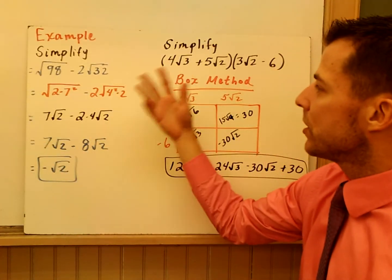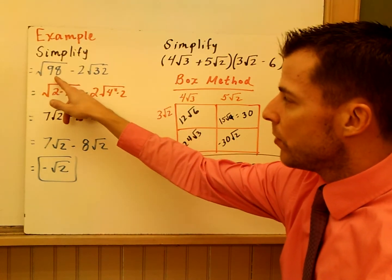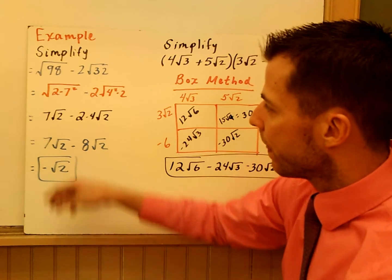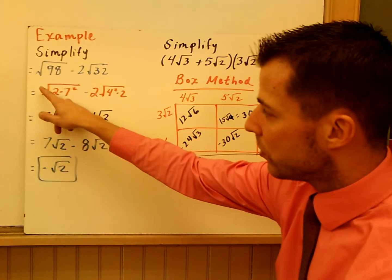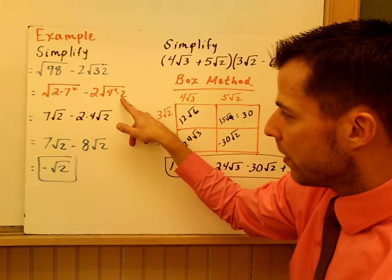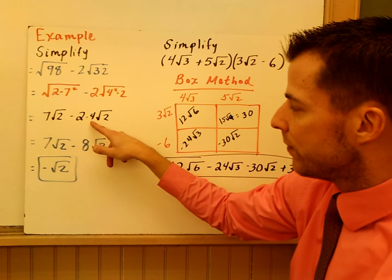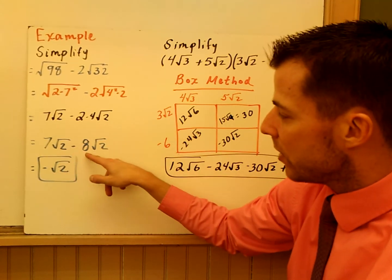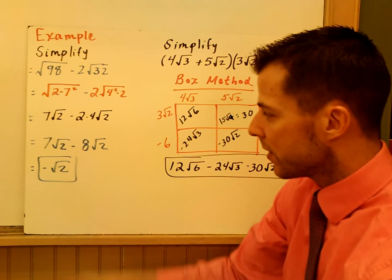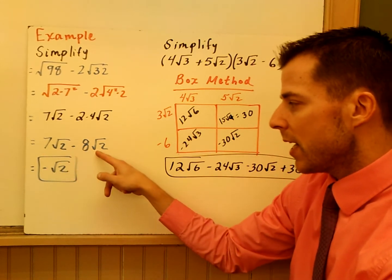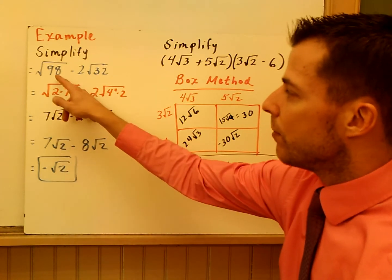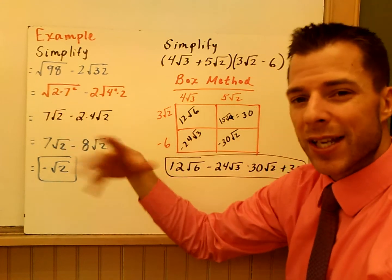Last example — combining the concepts. Simplify the square root of 98 minus 2 times the square root of 32. Break down 98 into 2 times 7 squared, trying to get the numbers underneath to match the index. Minus 2 times the square root of 4 squared times 2. The 7 comes out: you get 7 root 2 minus 2 times 4 root 2, which is 7 root 2 minus 8 root 2. These are like terms because they have the same radicand and same index — it's like 7x minus 8x, which is negative x. So you get negative root 2. This goes back to the essential understanding: break down numbers to match your index power — it's really prime factorization.